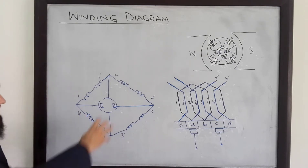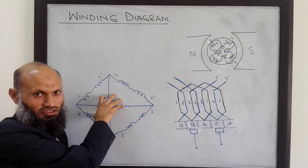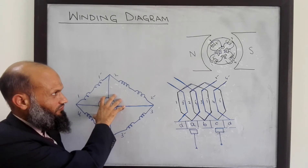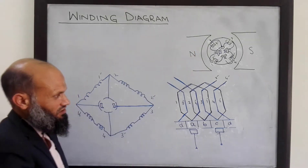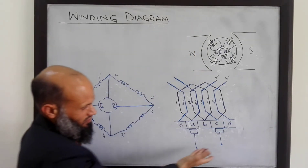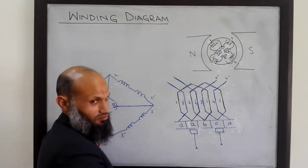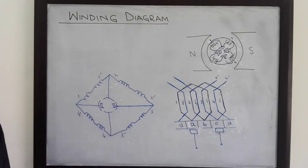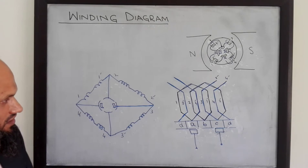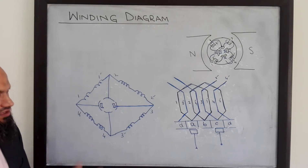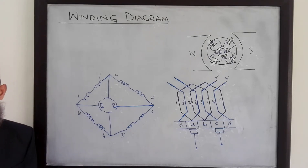This diagram will become much more complicated if we have a complex DC machine. However, this diagram still remains simple, and that is one advantage of the winding diagram. Let's sketch the winding diagram for a more complex DC machine.